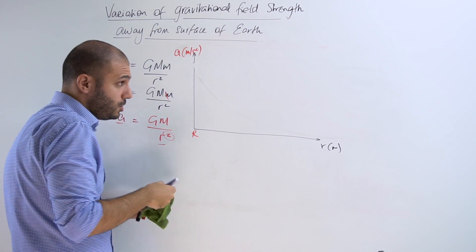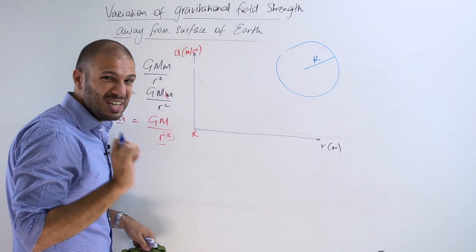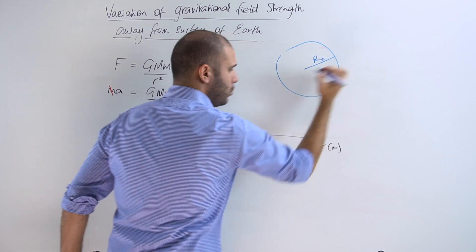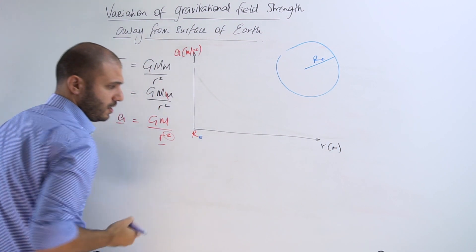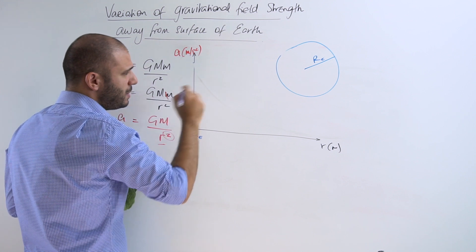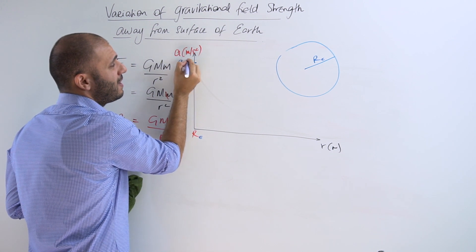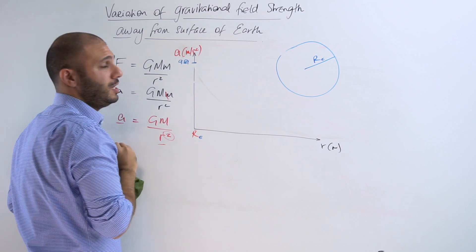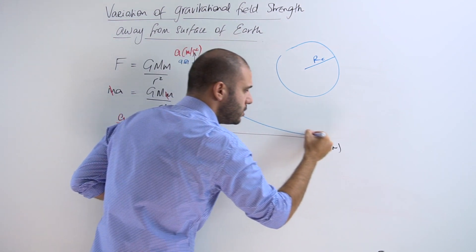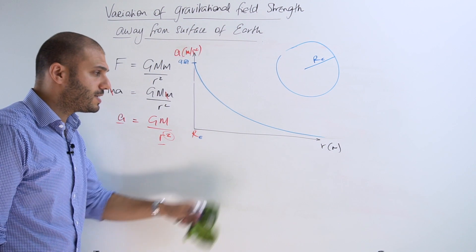Let me just sketch a diagram. R, capital R, being the radius of Earth — let me be even more specific: R subscript E, radius of Earth. That means we're going to start off at the surface at 9.81 meters per second squared, and again we're going to follow an inverse square law with the x-axis being an asymptote.